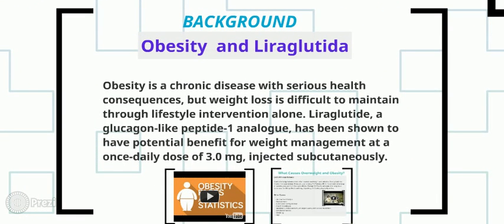Background: Obesity and Liraglutide. Obesity is a chronic disease with serious health consequences, but weight loss is difficult to maintain through lifestyle interventions alone. Liraglutide, a glucagon-like peptide-1 analogue, has been shown to have potential benefit for weight management at a once-daily dose of 3mg injected subcutaneously.